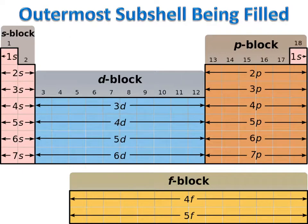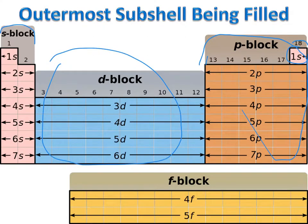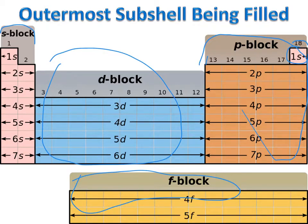We can also look at the periodic table in terms of which orbitals are being filled in a certain block of elements. Groups one and two, plus helium, put electrons in the S subshells — so we call them the S block. Groups 13 through 18, with the exception of helium, are the P block. The transition metals, where electrons go into D subshells, are the D block. The intertransition metals at the bottom, where electrons go into F subshells, are the F block.